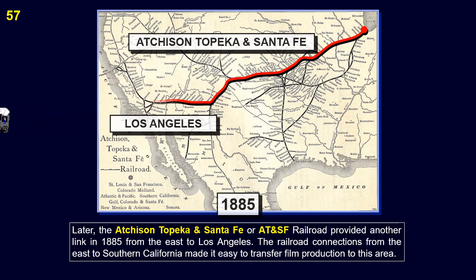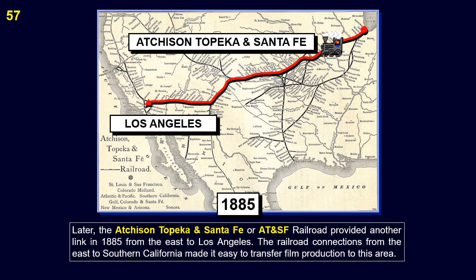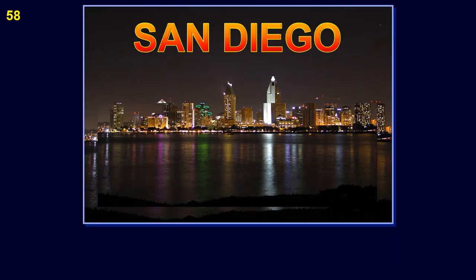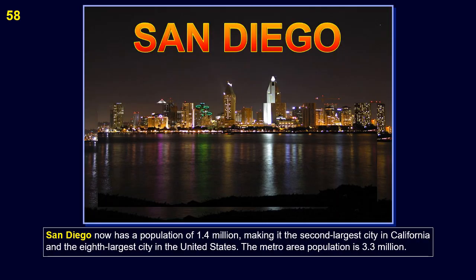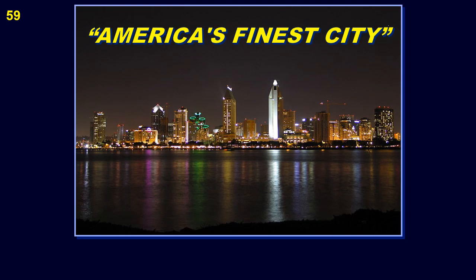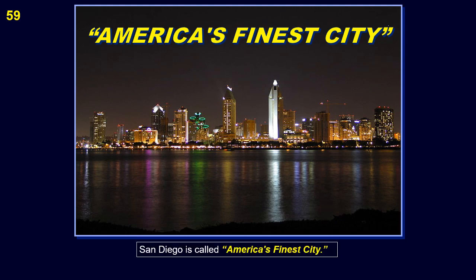Later, the Atchison, Topeka, and Santa Fe, or AT&SF Railroad provided another link in 1885 from the east to Los Angeles. The railroad connections from the east to southern California made it easy to transfer film production to this area. San Diego now has a population of 1.4 million, making it the 2nd largest city in California and the 8th largest city in the United States. The metro area population is 3.3 million. San Diego is called America's finest city.